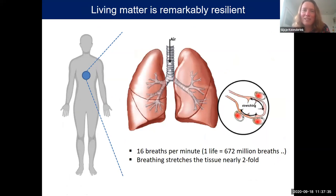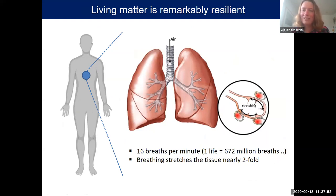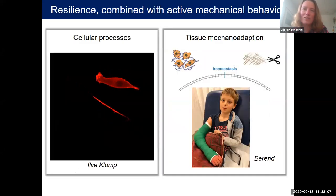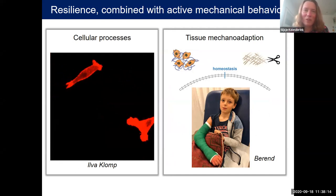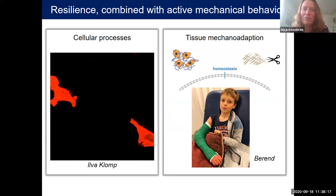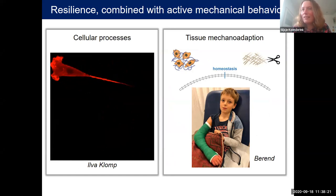Living matter is very special soft matter, and in many ways, but definitely also in a mechanical sense. One remarkable thing is its mechanical strength. While you're sitting here, your lungs are breathing in and out on average 16 times a minute, and each time this stretches the tissue nearly twofold. Cells are greatly challenged by this and need to be mechanically resilient. But even more extraordinary is that cells and tissues are also dynamic and adaptive — cells can move, and at the tissue level, living matter is very adaptive, usually on longer timescales.